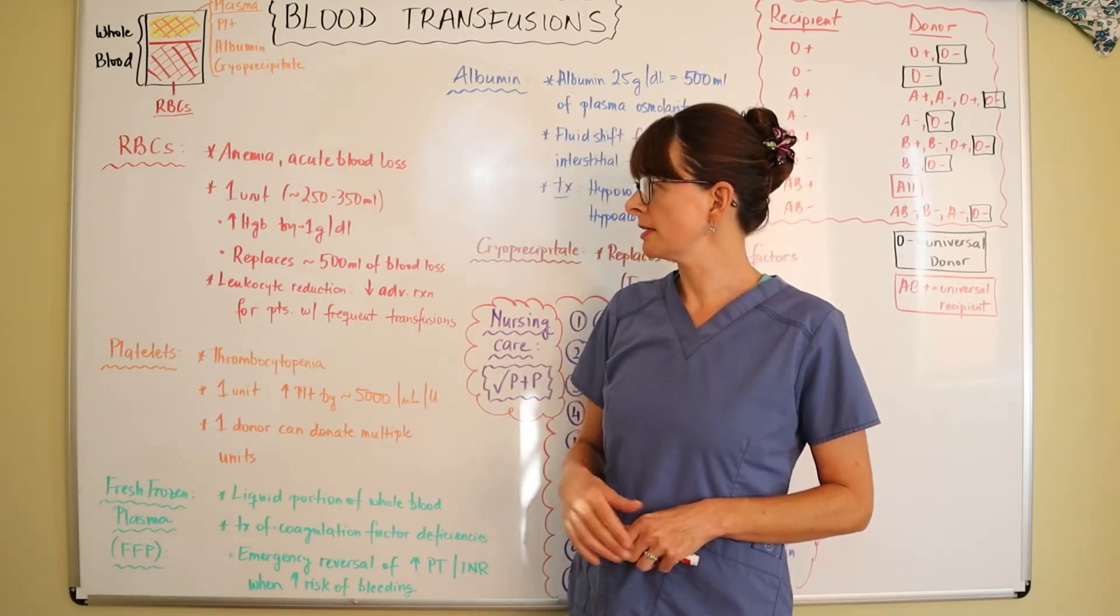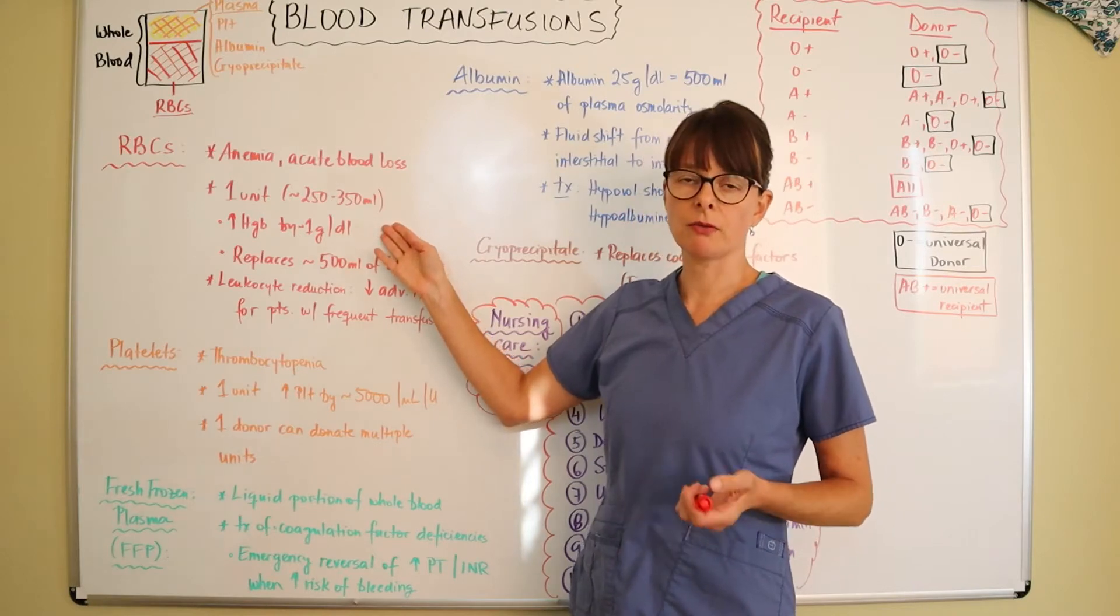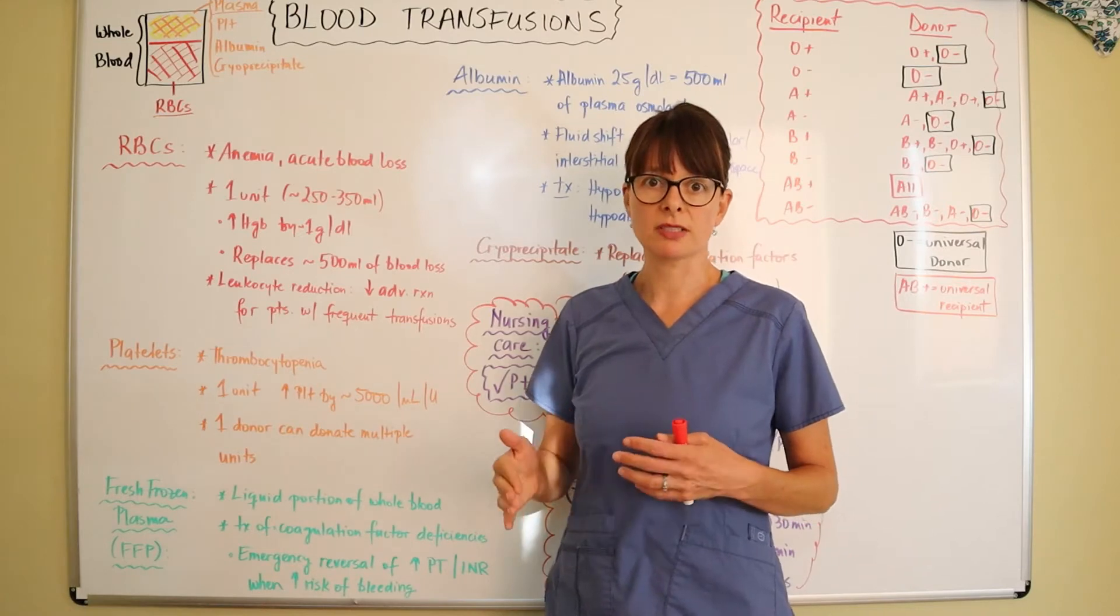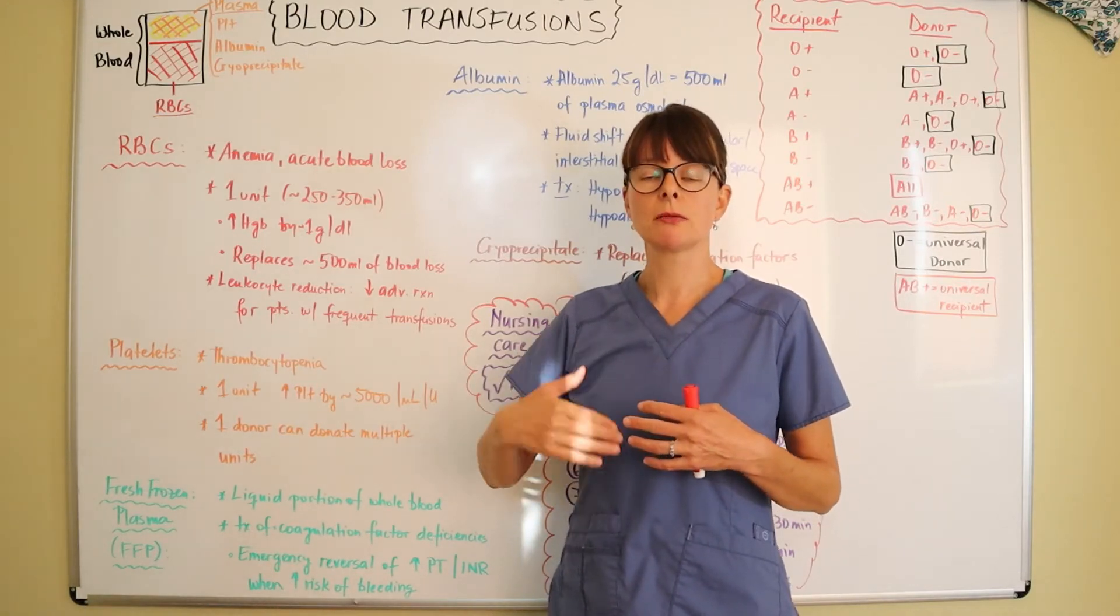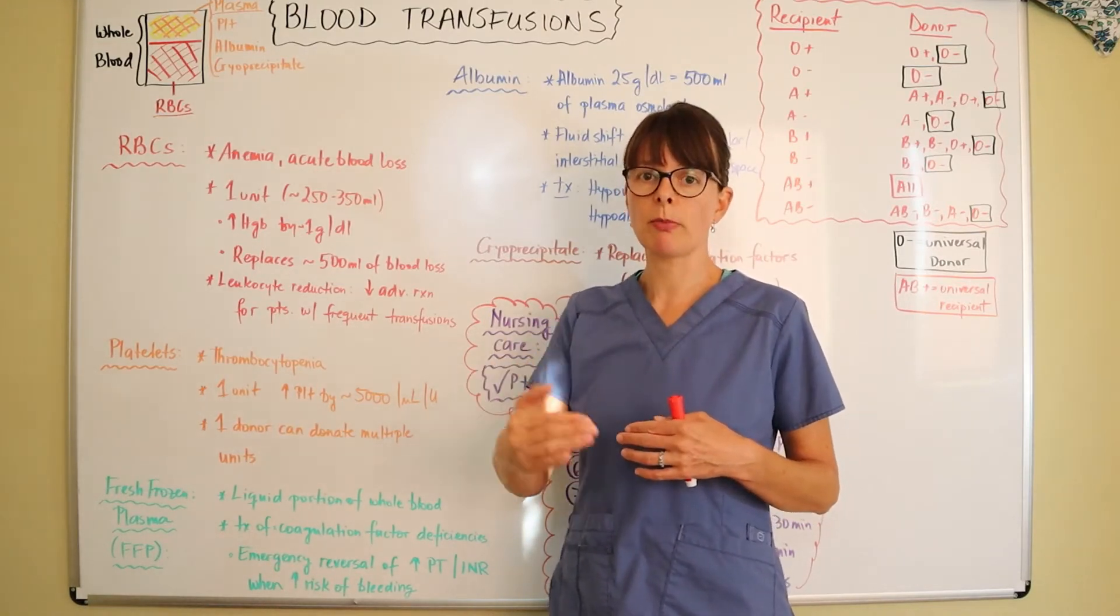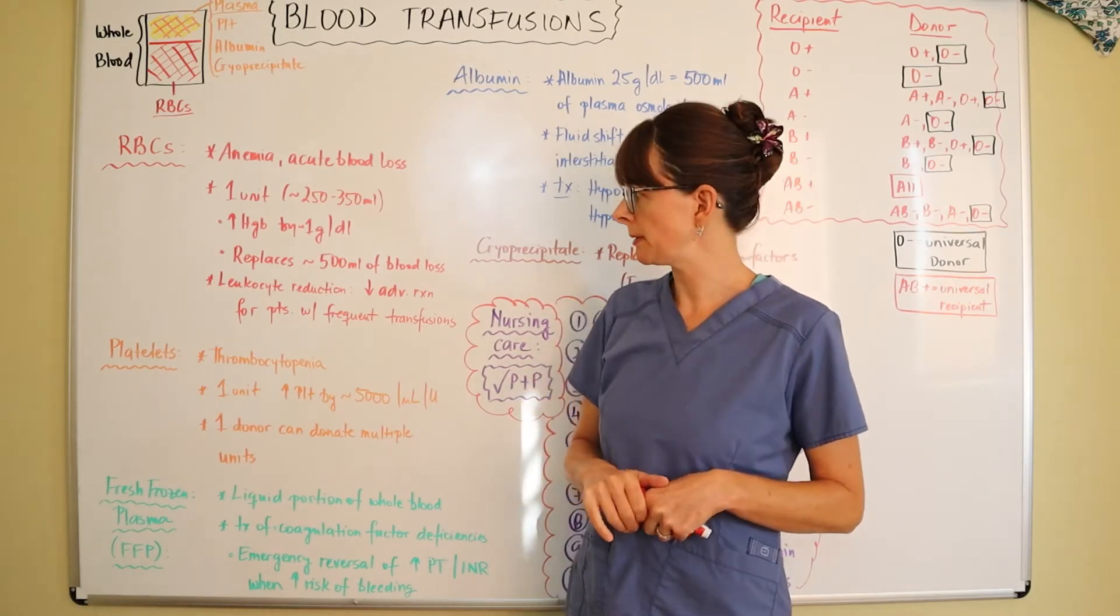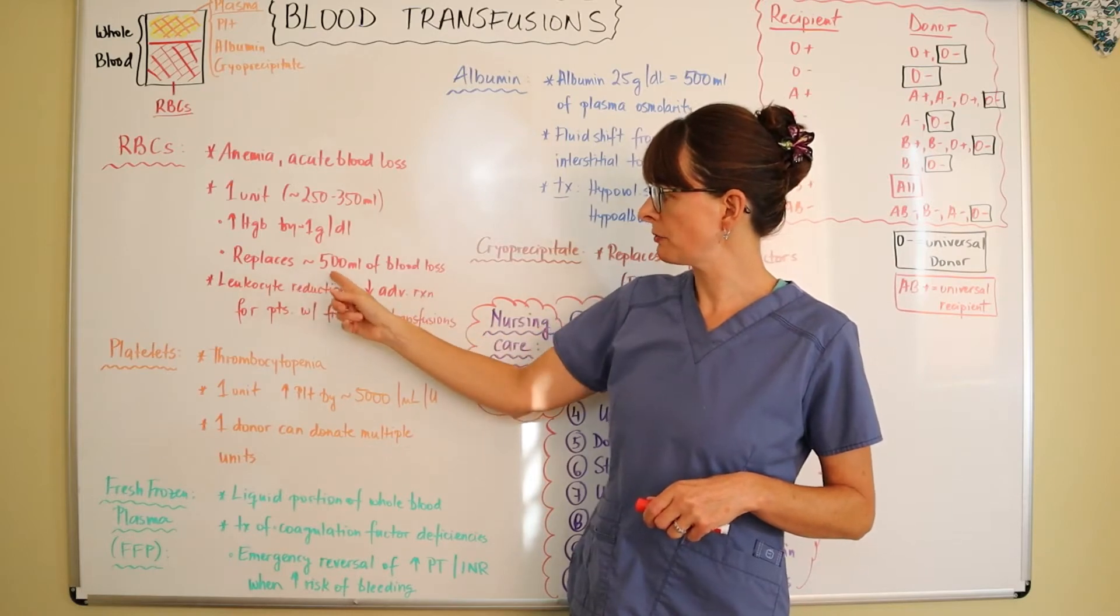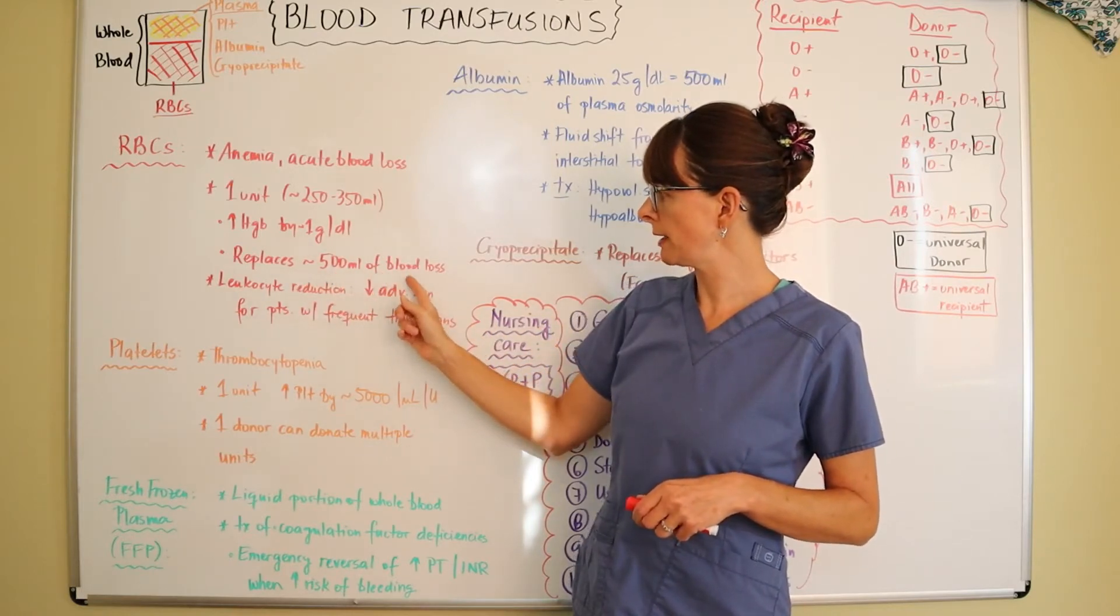Depending on if they are male or female, typically hemoglobin level is anywhere between 12 and 16. So they could need multiple units to bring the level back up. One unit of red blood cells replaces about 500 ml of blood loss.